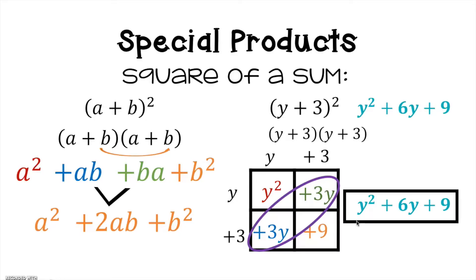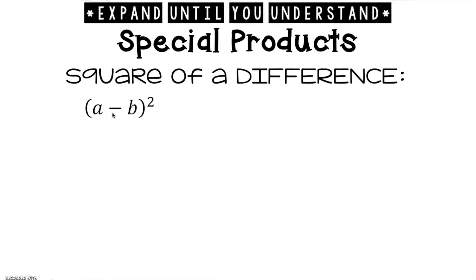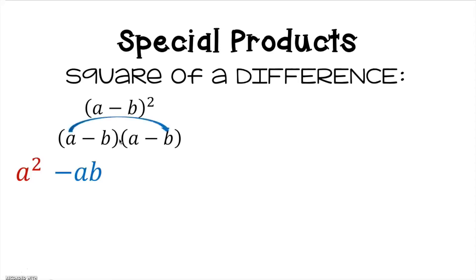Now we're going to go a little bit quicker with square of a difference. It's the exact same thing as square of a sum, except now you're subtracting between the two terms. Expanding: (a − b)(a − b). First is a times a, which is a squared. Outer is a times negative b, which is negative ab. Inner is negative b times a. And last, negative b times negative b, which gives you a positive b squared — remember, negative times negative is positive.